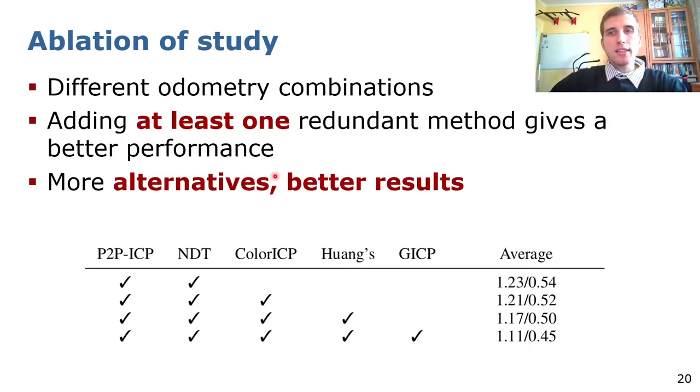In addition, we conducted an ablation study where we can see that if we add at least one redundant method, it gives simultaneously better performance. For example, we have point-to-plane ICP and we add in a parallel way NDT, and we have better results in comparison to all individual methods. We can see that the more methods, our system works better and better. Even if we add color ICP, which is basically the worst method within those five algorithms, it also gives slightly better performance in the system.